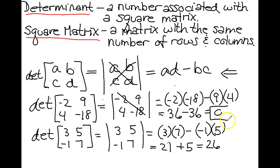So you can see here, in one example, we got 0 as the determinant. In another example, we got 26 as the answer of the determinant. So that is how you take the determinant of a 2 by 2 matrix.